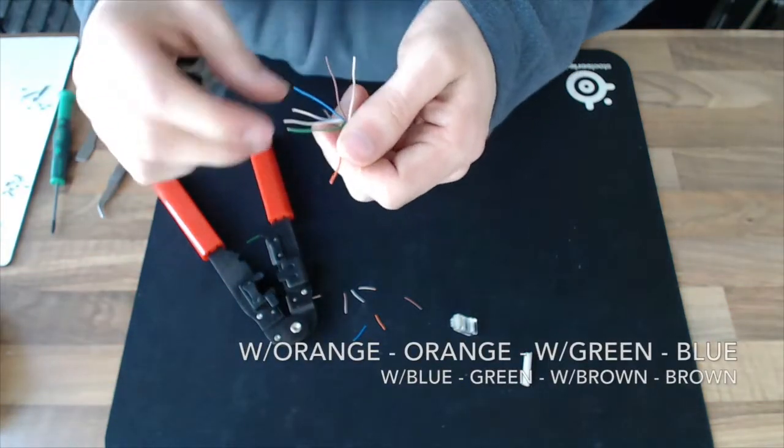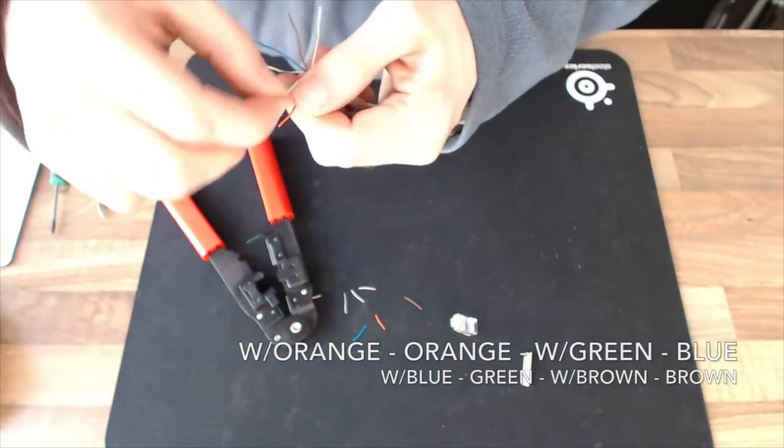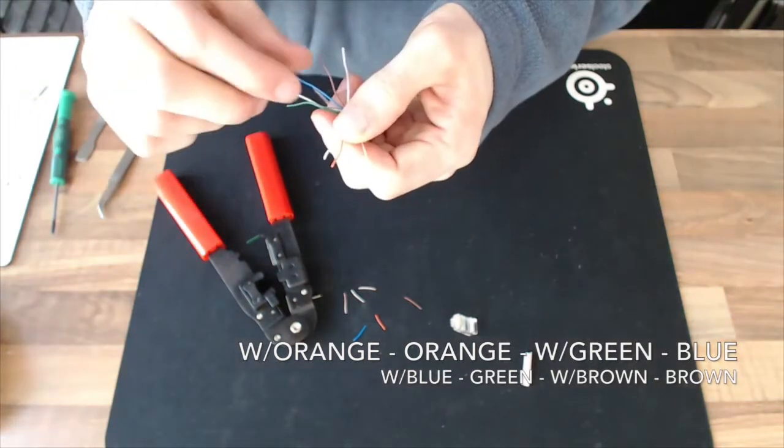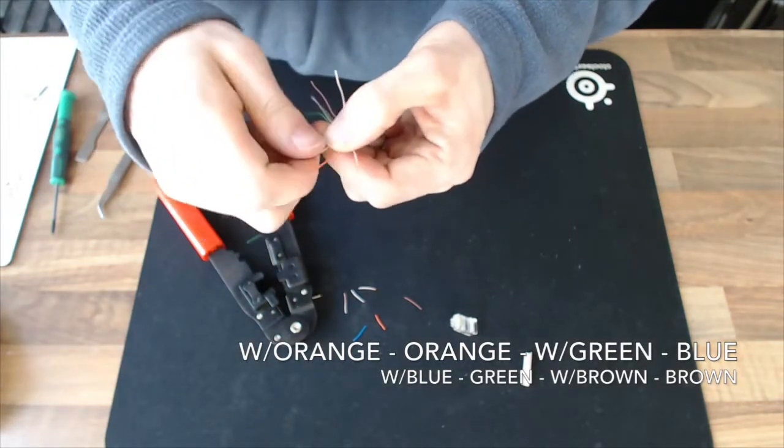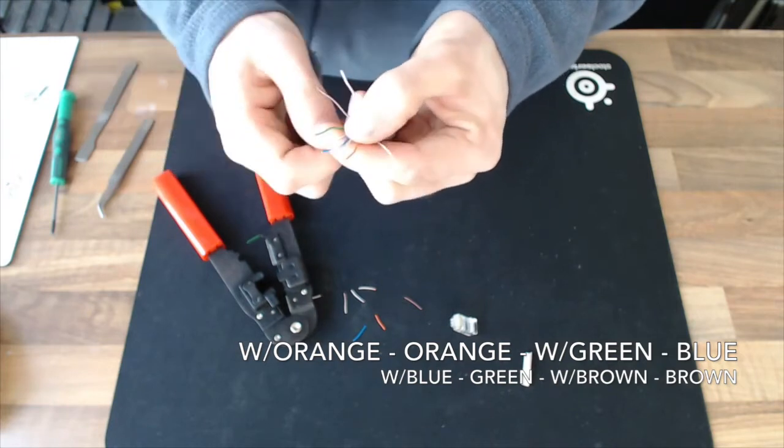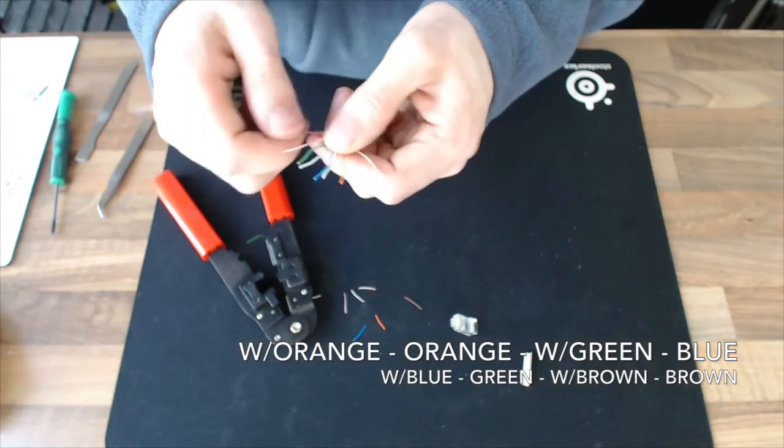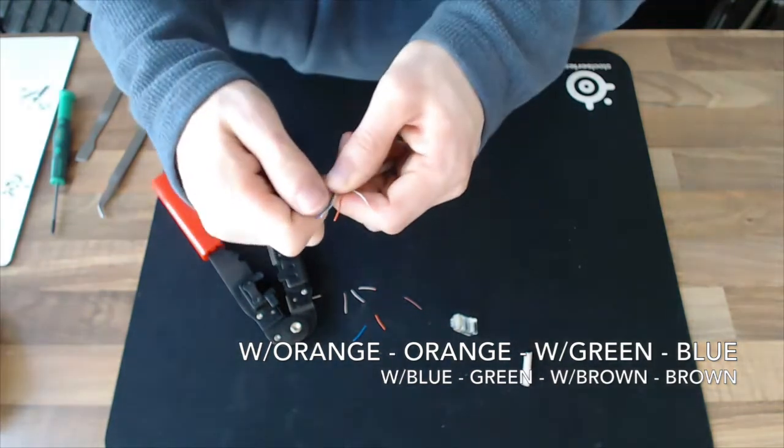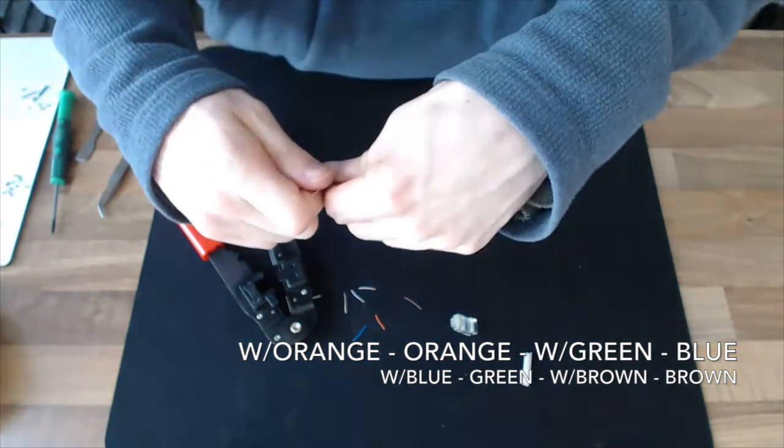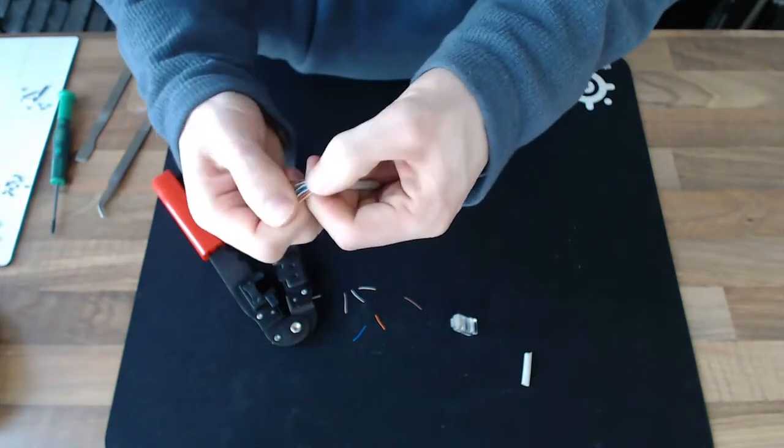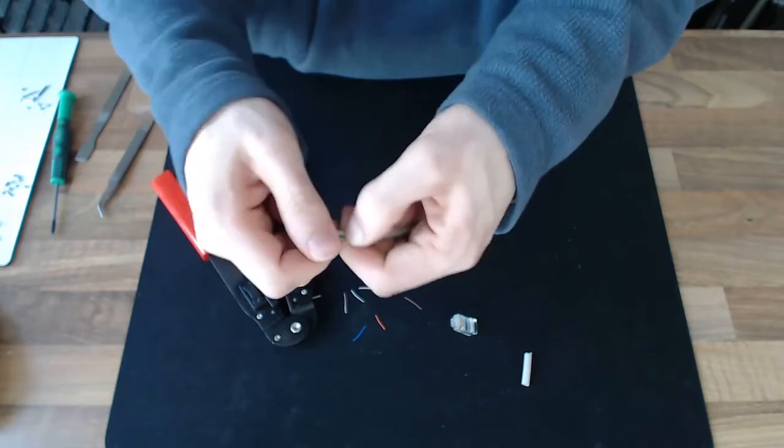Set your order: white, orange, orange, white, green, blue, white, blue, green, white, brown, brown. And then just gather those up between one finger and thumb. Then hand back to the other and straighten them out.